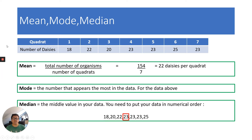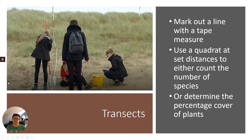What if you're looking at an area with a mixed distribution of plants — for example, changes in habitat from a playing field into woodland, where there are changes in light, humidity, and temperature? To investigate how distribution changes across such an area, we use transects.